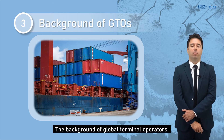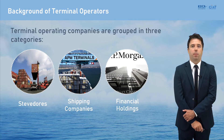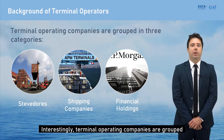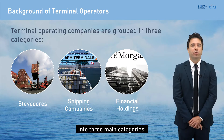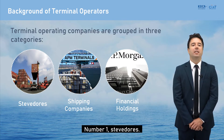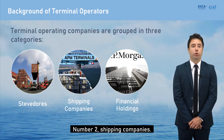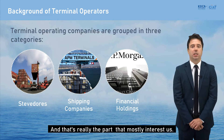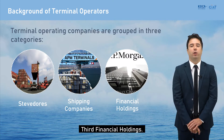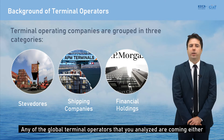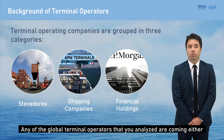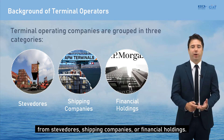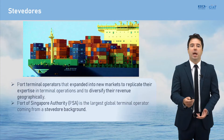Regarding the background of global terminal operators: terminal operating companies are grouped into three main categories — stevedores, shipping companies, and financial holdings. Any global terminal operator you analyze is coming from one of these three backgrounds. Let's look at a few examples.